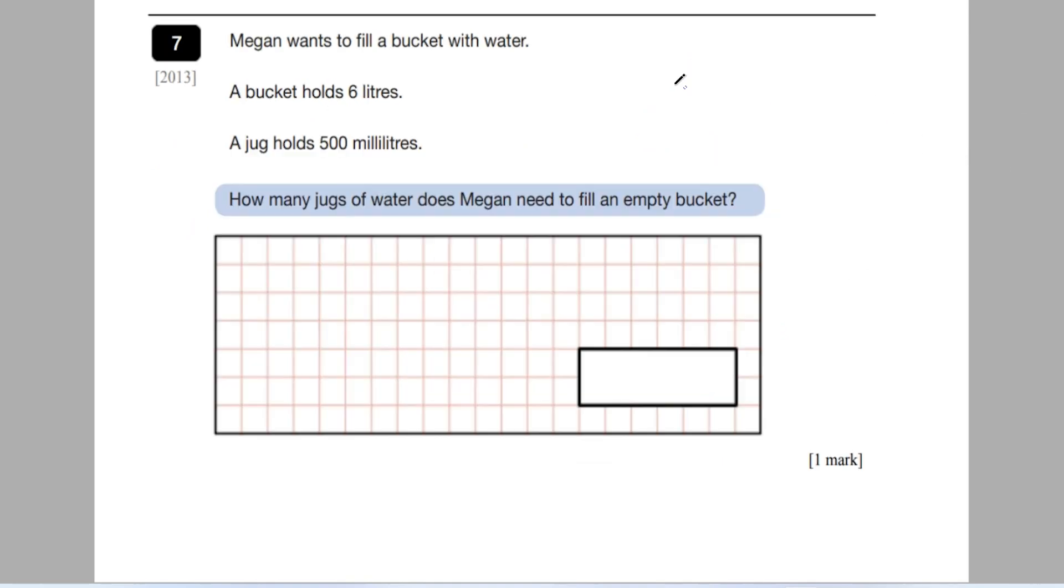Next one, we've got a more traditional word problem here with some information. Megan wants to fill a bucket of water. A bucket holds six litres, which we know is 6,000 millilitres. A jug holds 500 millilitres. How many jugs of water does Megan need to fill the empty bucket? So essentially, how many 500s does she need to get to 6,000?